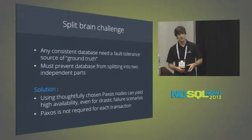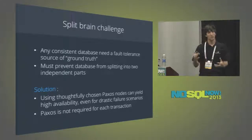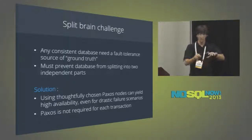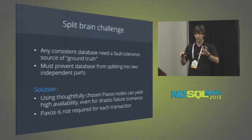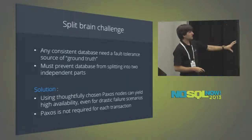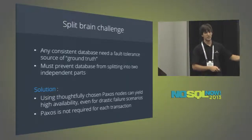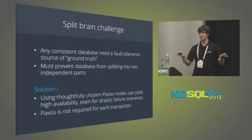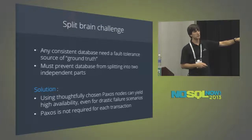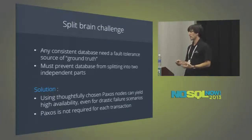The second challenge is the split brain challenge — network partitioning. If there's a network partition where half the machines are on one side and half on the other, who picks up the torch? They cannot both continue working and maintain consistency. The solution is to use an algorithm like Paxos — something Apache ZooKeeper uses — and thoughtfully choose your Paxos nodes to ensure the majority stay up and available to determine which half of the cluster can live on. It ultimately comes down to fault tolerance and how many machines can fail while the system stays up.